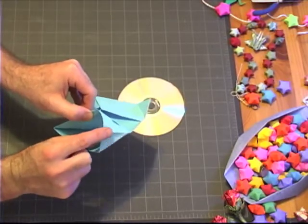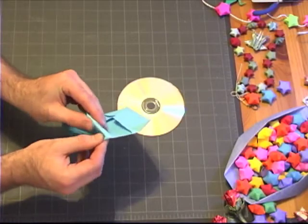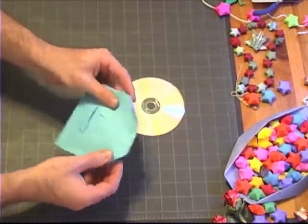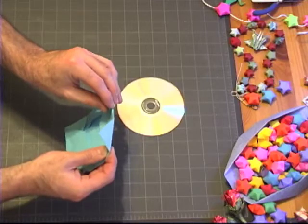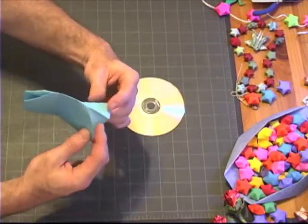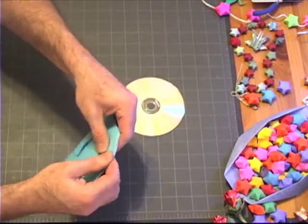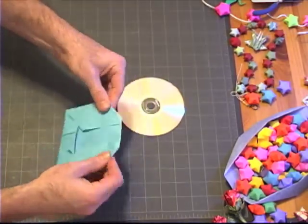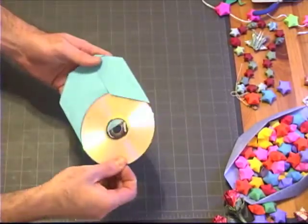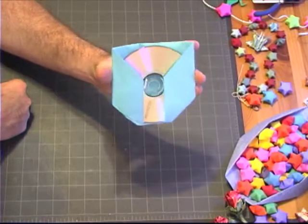And you're going to reverse fold on that diagonal crease that you made, folding it behind into the model like this.